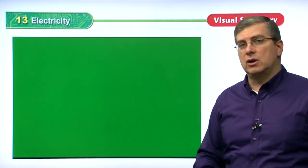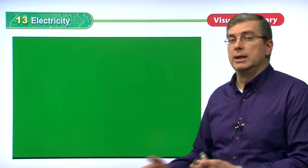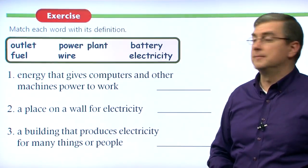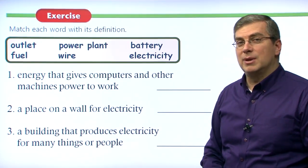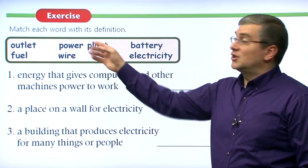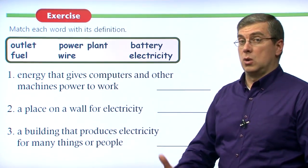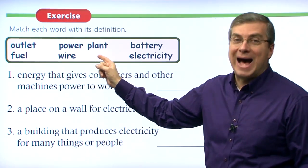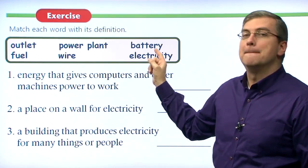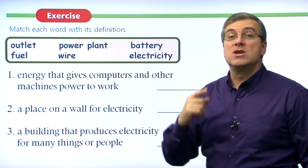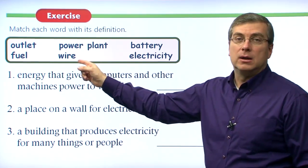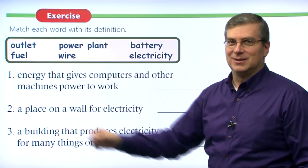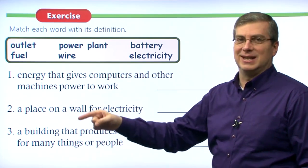Many machines, we say turn it on: turn the computer on, turn your cell phone on, turn the lamp on. Now it's time to review the vocabulary with a matching exercise. We need to match each word with its definition. Our words are outlet, power plant, battery, fuel, wire, and electricity.